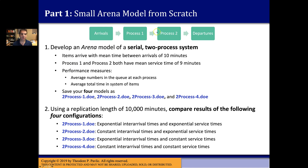I'm asking you to build a model that roughly looks like this flow, where you have arrivals coming in — a create block in the basic process blocks in ARENA — eventually reaching a departure, which is your dispose block, with two processes in between. I want each process to use a separate resource. Both should be configured as seize-delay-release, with one resource type for process one and a separate resource type for process two. Both can have capacity one.